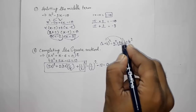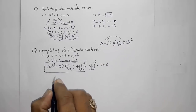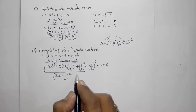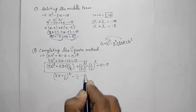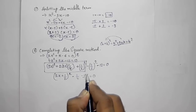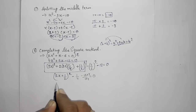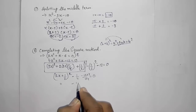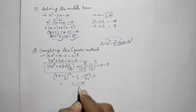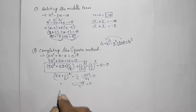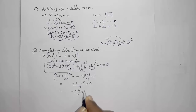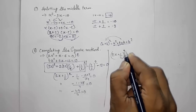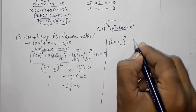We convert to the perfect square form: (2x + 1/2)² − 1/4 − 12 = 0. Finding the LCM: −1/4 − 48/4 = −49/4. So the equation becomes (2x + 1/2)² − 49/4 = 0.